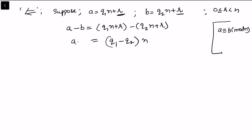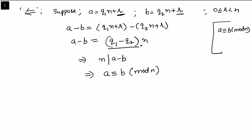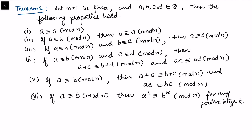We can see that r gets cancelled, so a minus b equals (q1 minus q2) times n. This means a minus b is a multiple of n, so n divides a minus b. By the definition of congruence, we can write this as a is congruent to b modulo n, and hence our result holds.